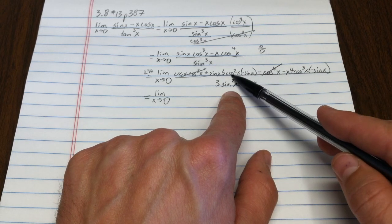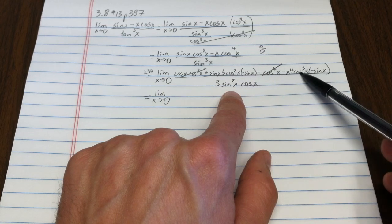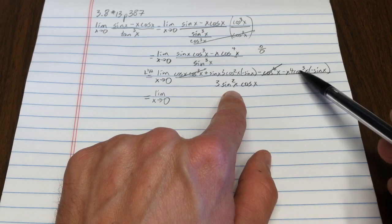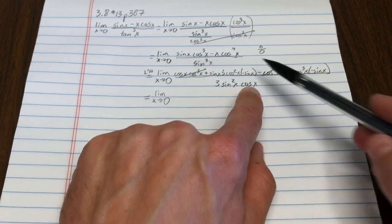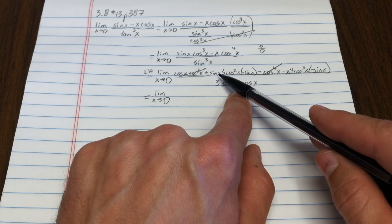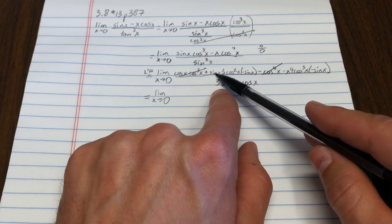Also, notice that this has a cosine squared, cosine to the third. I could divide the top by cosine squared, but the denominator only has one cosine. So I will divide every single term by sine x, cosine x.